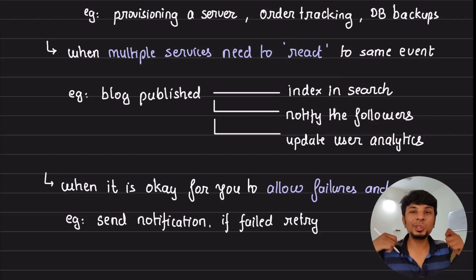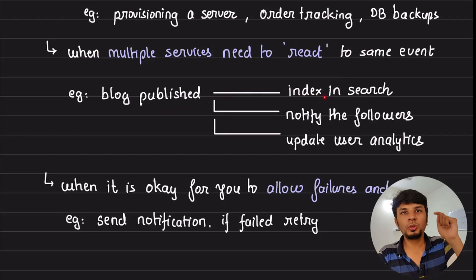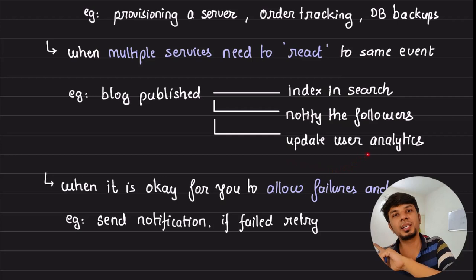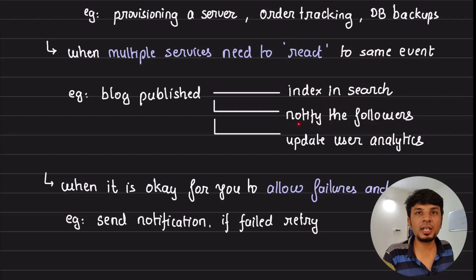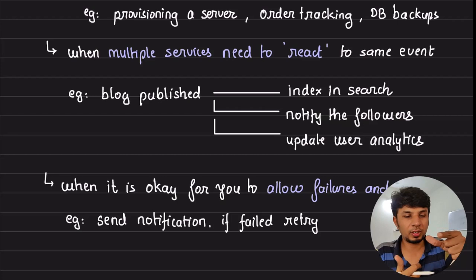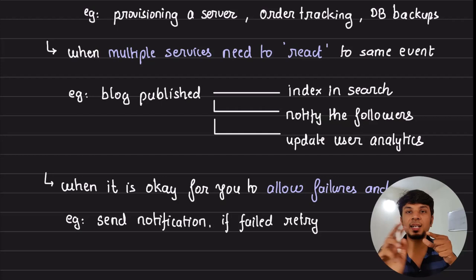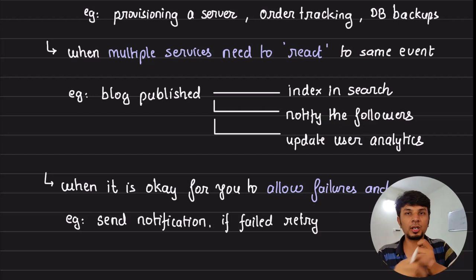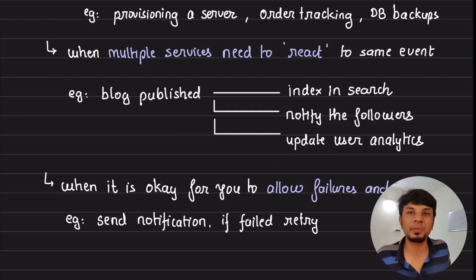Use async when multiple services need to react to the same event. For example, when a blog is published, you need to index it in search, notify all followers, and update user analytics — three independent things triggered by one event. The blog service synchronously pushes one message to the broker, which is consumed by the search service, notification service, and analytics service independently. If tomorrow you need a fourth service to consume the same message, you just add it — seamless extensibility.